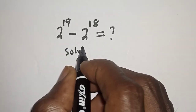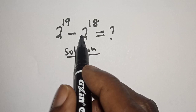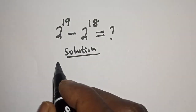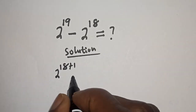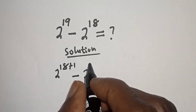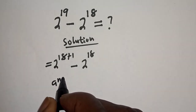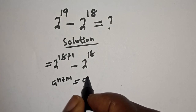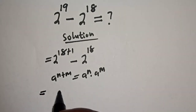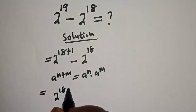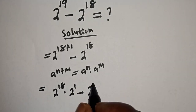Solution. Here is 2 raised to power 19, and this is 2 raised to power 18. Then 2 raised to power 19 can be written as 2 raised to power 18 plus 1, minus 2 raised to power 18. Take note that if you have a raised to power n plus m, it equals a raised to power n multiplied by a raised to power m. Then this is equal to 2 raised to power 18 multiplied by 2 raised to power 1, minus 2 raised to power 18.